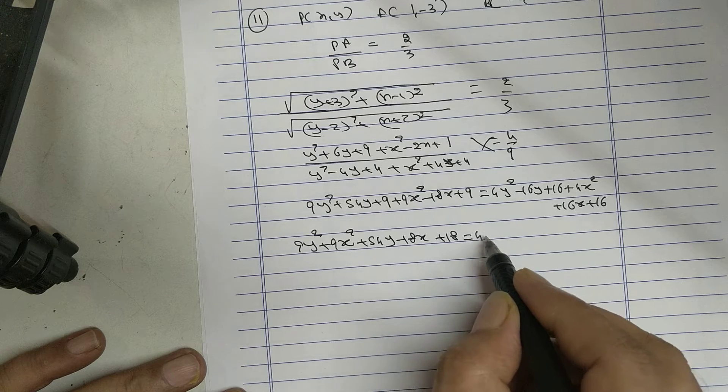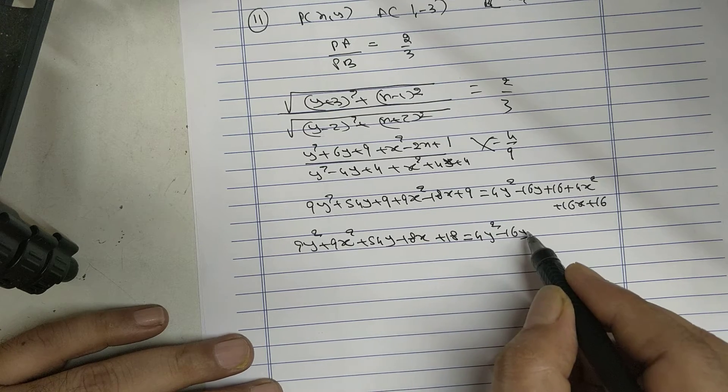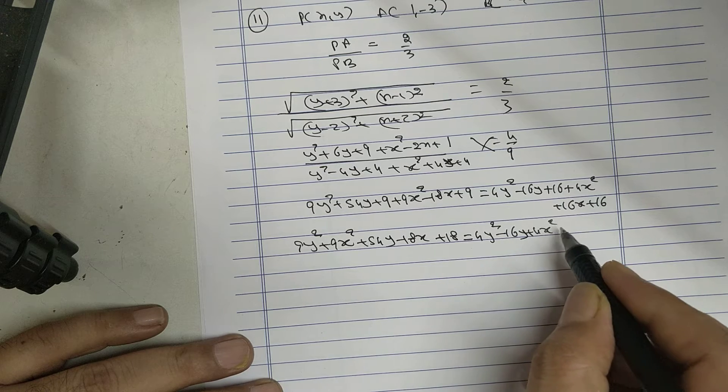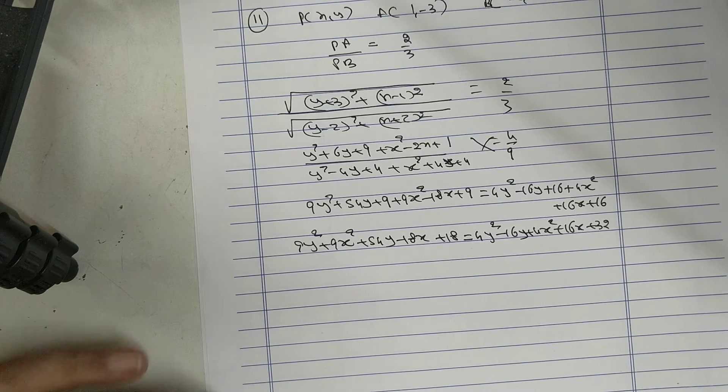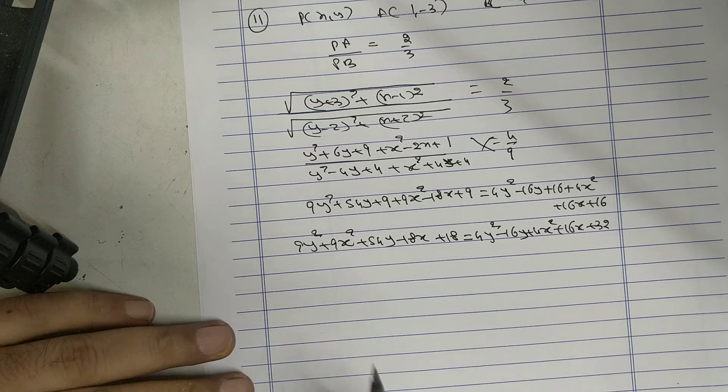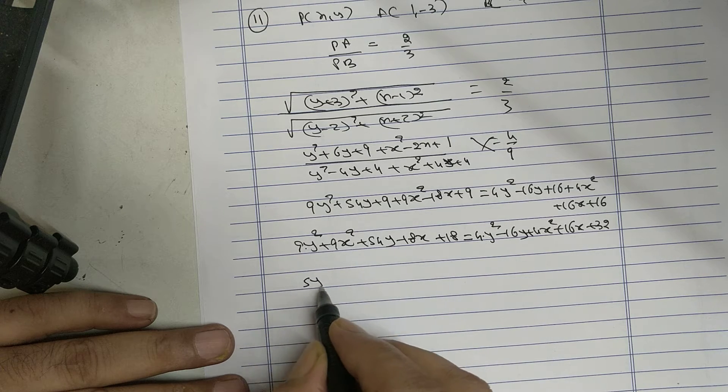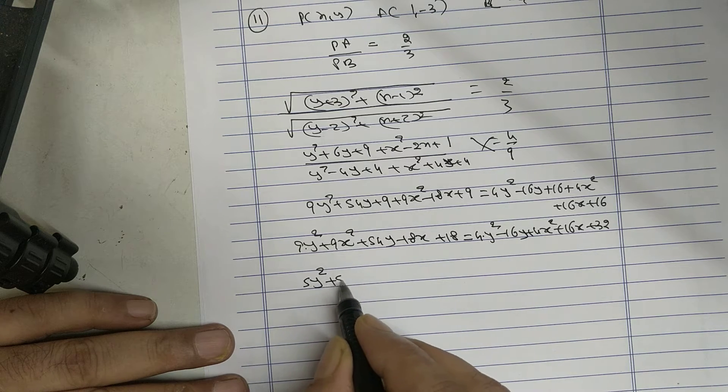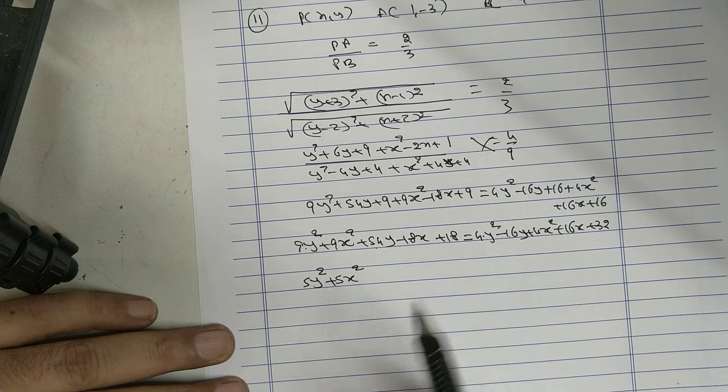Equal to 4Y square minus 16Y plus 4X square plus 16X plus 32. Bring all one side. So 9Y square minus 4Y square is 5Y square, 5X square, 54Y plus 16Y.